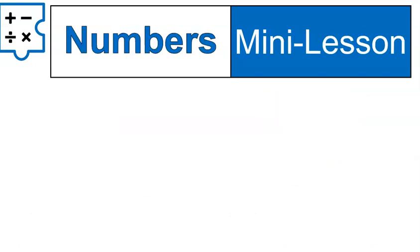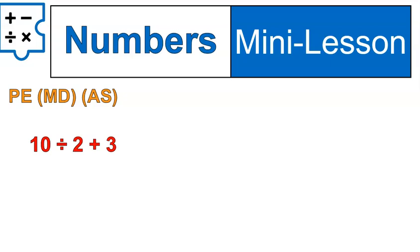Now let's look at actual numbers — I think that's when things really start to make sense. I'll leave the order of operations on screen to guide us. Here is our first question: 10 divided by 2 plus 3. There are no grouping symbols, no exponents, but there is division. Looking through the list — grouping symbols, exponents — we get to the multiplication/division step. So let's do it: 10 divided by 2 is 5. Now all we have left is addition, so 5 plus 3 gives us 8.